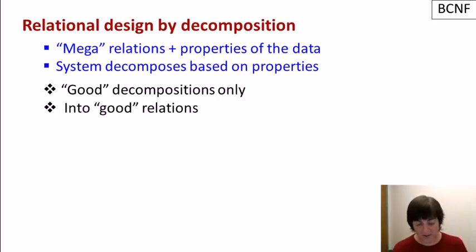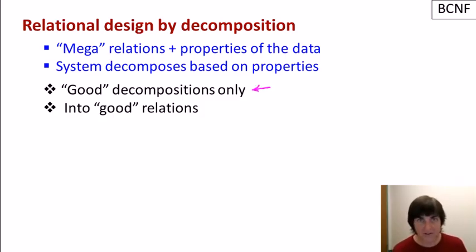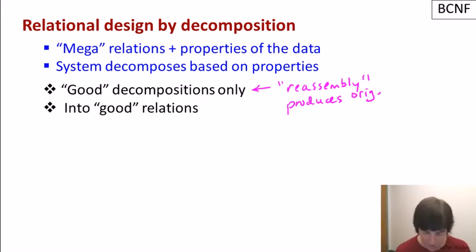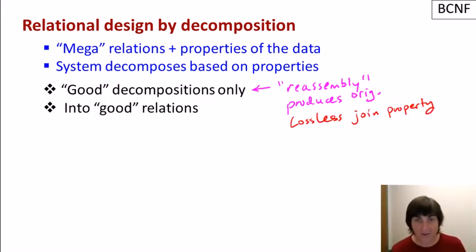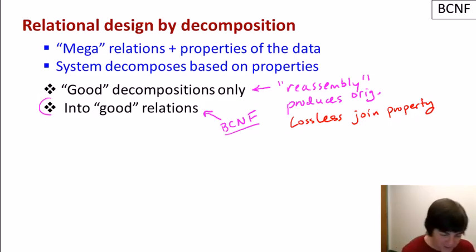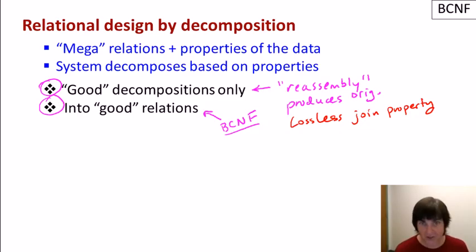A good decomposition must capture all attributes, but more importantly, the reassembly by join must produce the original relation — sometimes called the lossless join property. The second thing we want is that the decomposed relations are themselves good relations, specifically those in Boyce-Codd normal form. Let's formally define BCNF and then figure out an algorithm for automatically decomposing relations into BCNF.